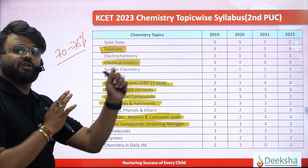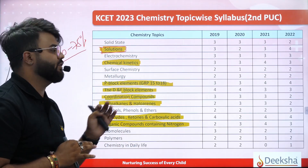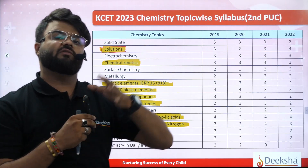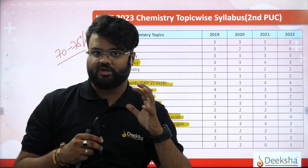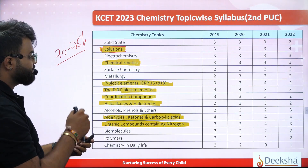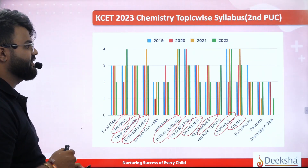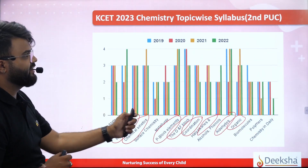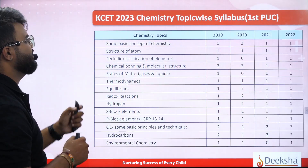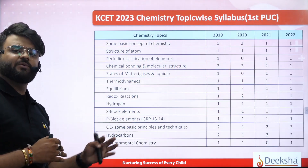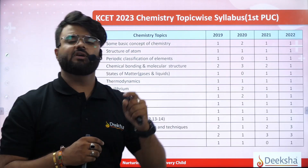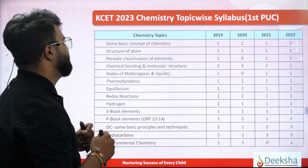Almost 70 to 75% of the questions will be coming from the second PUC chemistry topics. We know that we have 16 chapters in second PUC. These chapters are very important. Looking at the bar graph, we now have to look at the first PUC syllabus. First PUC syllabus has 14 chapters.